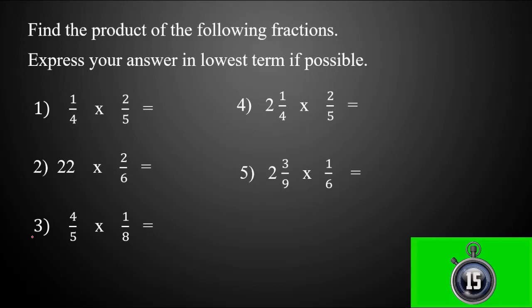Time's up! Let's check your answers. Number one: one-fourth times two-fifteenths. Using the cancellation method, we can cancel out two by dividing the numerator two by two, giving one, and the denominator four by two, giving two. Our new numerators are one times one, which equals one, and denominators are two times five, which equals ten. So our final answer is one-tenth.